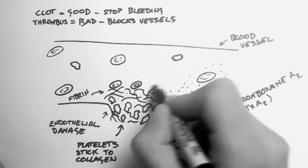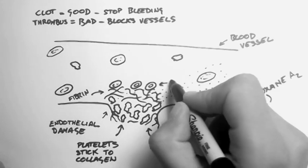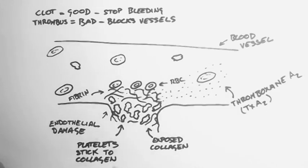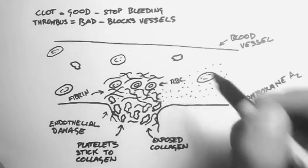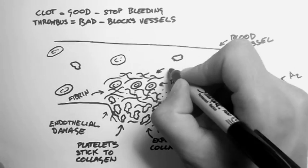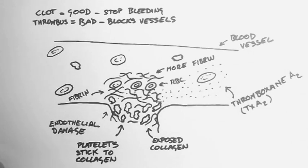Then this fibrin will trap a couple of red blood cells in it. And then on top of that, you'll get even more fibrin deposited. And then this process kind of repeats. And this is what causes a clot, or a thrombus.